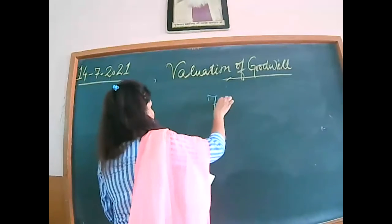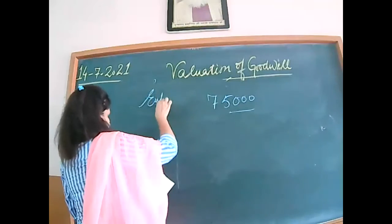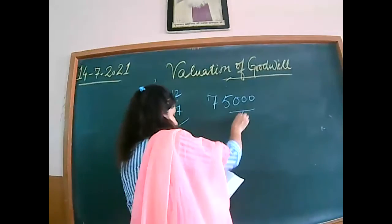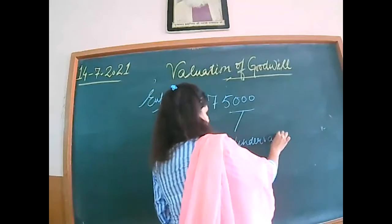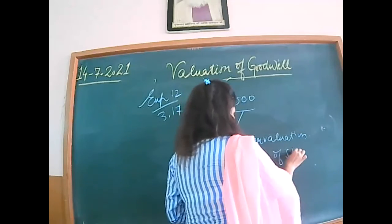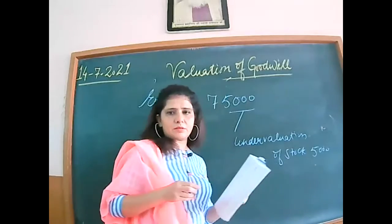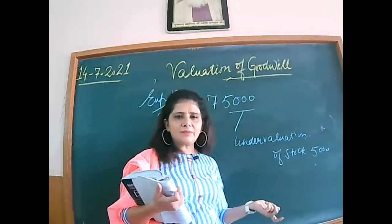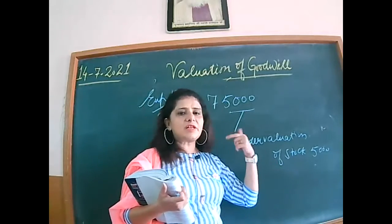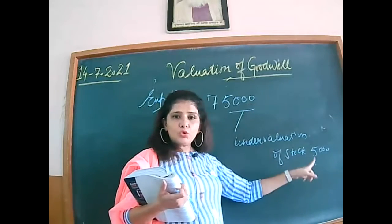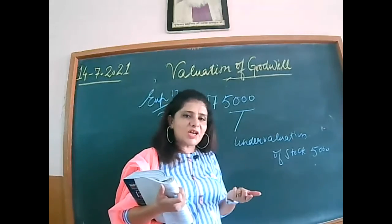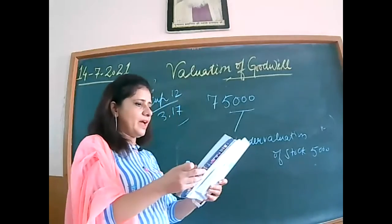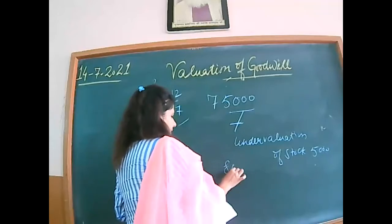In illustration number 12, at page 3.17, he is giving us average profit. The concern is earning average profit of 75,000 which includes undervaluation of stock of 5,000 on an average basis. When there is undervaluation of stock, profit has been understated, so in that case you need to add that amount to the profit. If there is overvaluation, you need to reduce the profit. So the adjusted profit will come to 80,000 after adding the undervaluation amount.